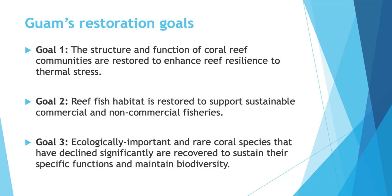We started our restoration planning process right at the beginning of the pandemic, which was actually incredibly helpful because we had time. During the very first step, we set goals for restoration. We have three goals for coral reef restoration on Guam: first, that the structure and function of coral communities are restored to enhance resilience to thermal stress — we've had pretty severe bleaching since 2013. Second, that reef fish habitat will be restored to support sustainable commercial and non-commercial fisheries. Third, that ecologically important and rare species that have declined significantly will be recovered to sustain their specific functions and maintain biodiversity.